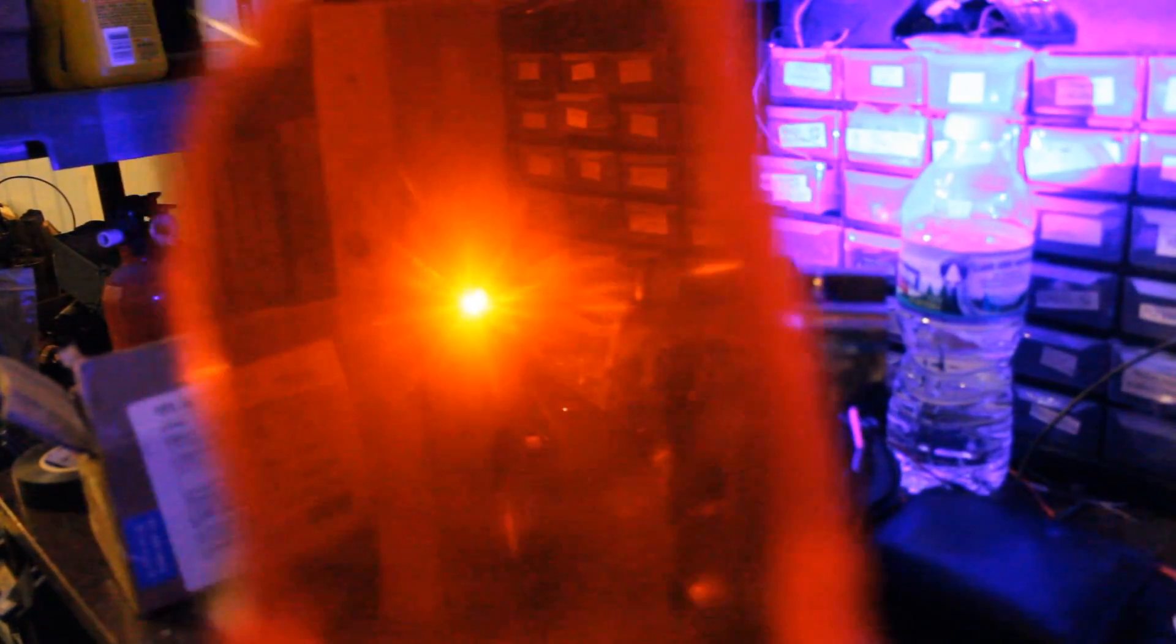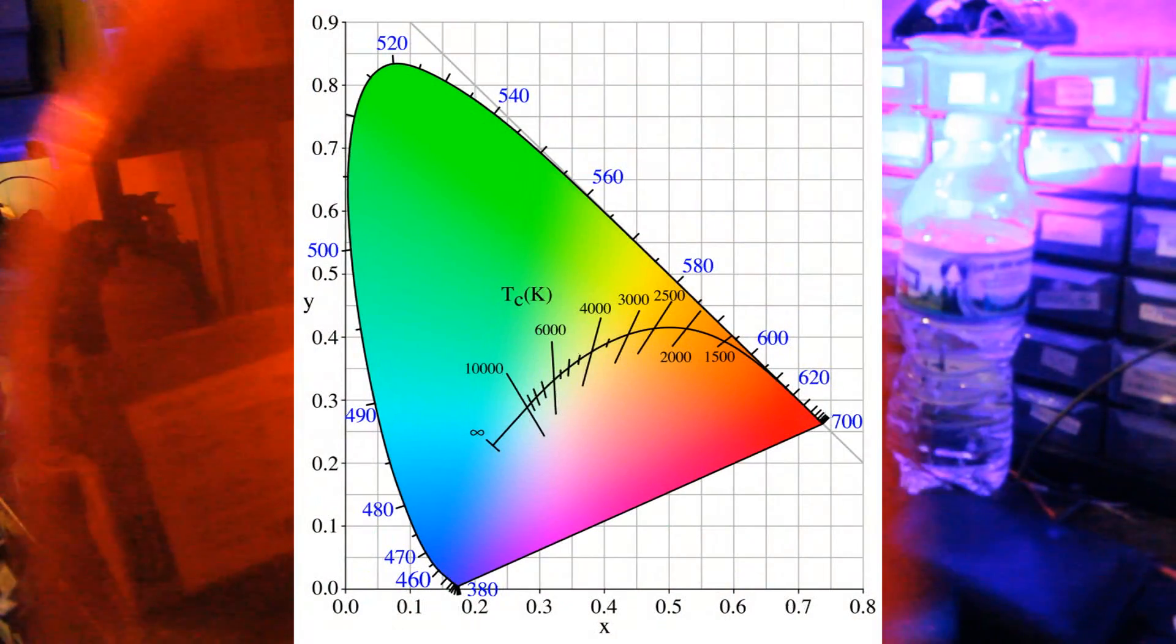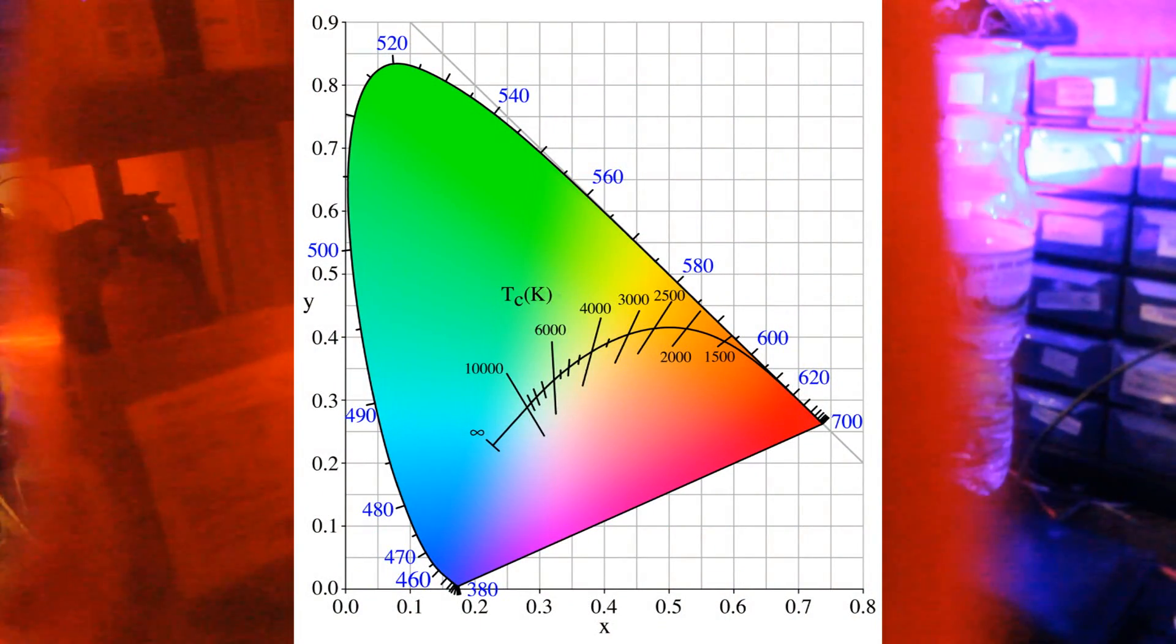When you block out the blue light with laser goggles, you can see that that surface is actually getting white hot, and going off of a black body radiation curve, that suggests a peak temperature of several thousand degrees.